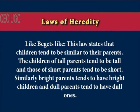Now we will take up the laws of heredity. The first law is 'like begets like,' which states that children tend to be similar to their parents. Children of tall parents tend to be tall, and those of short parents tend to be short. Similarly, bright parents tend to have bright children and dull parents tend to have dull ones. But sometimes we see white parents have black children and bright parents have less bright children, so the first law is not universally true.